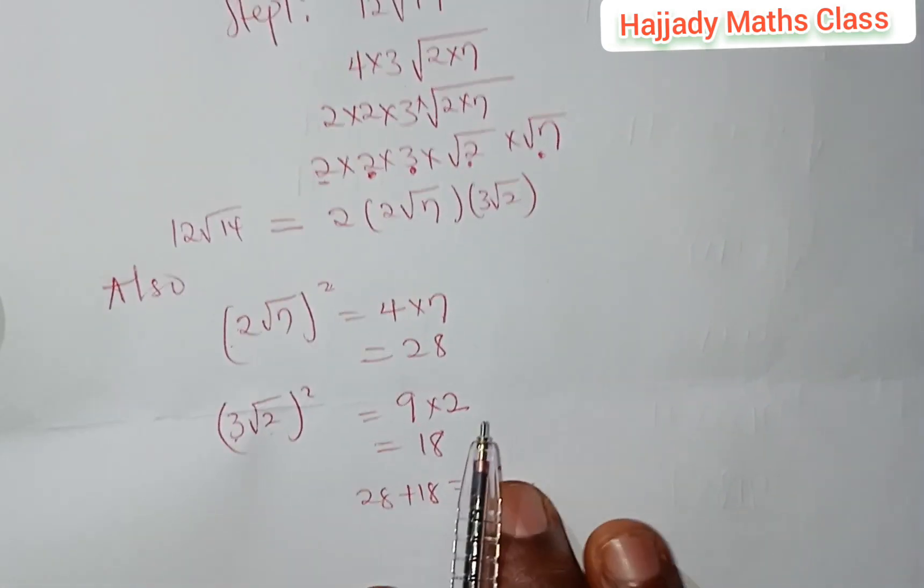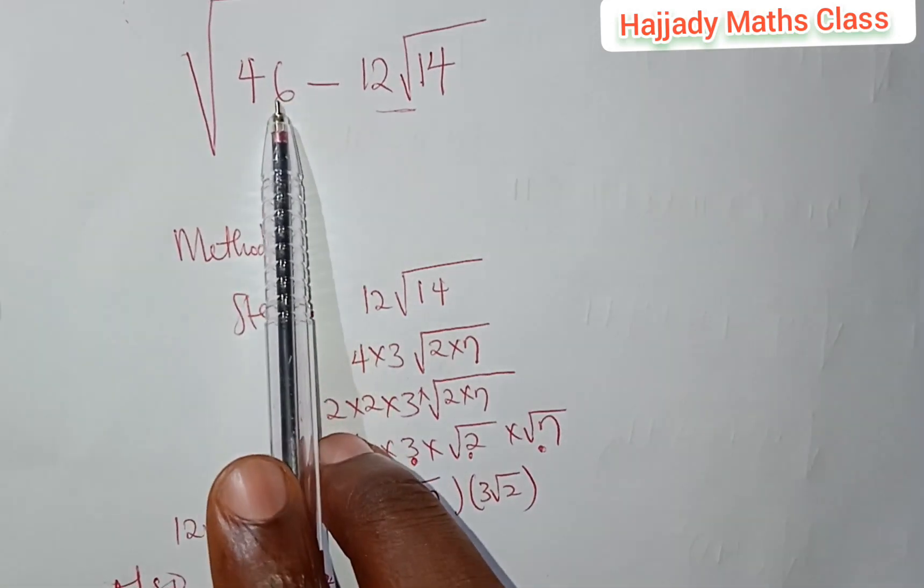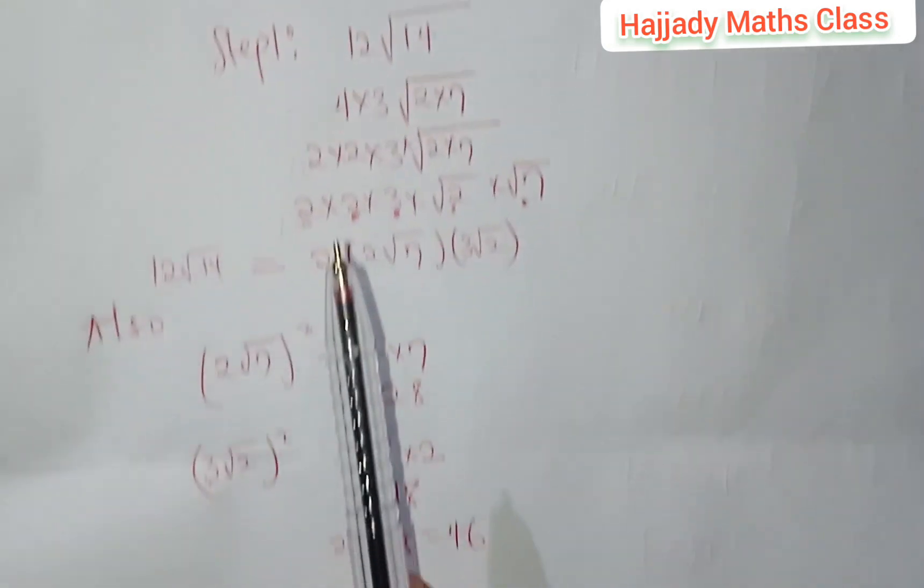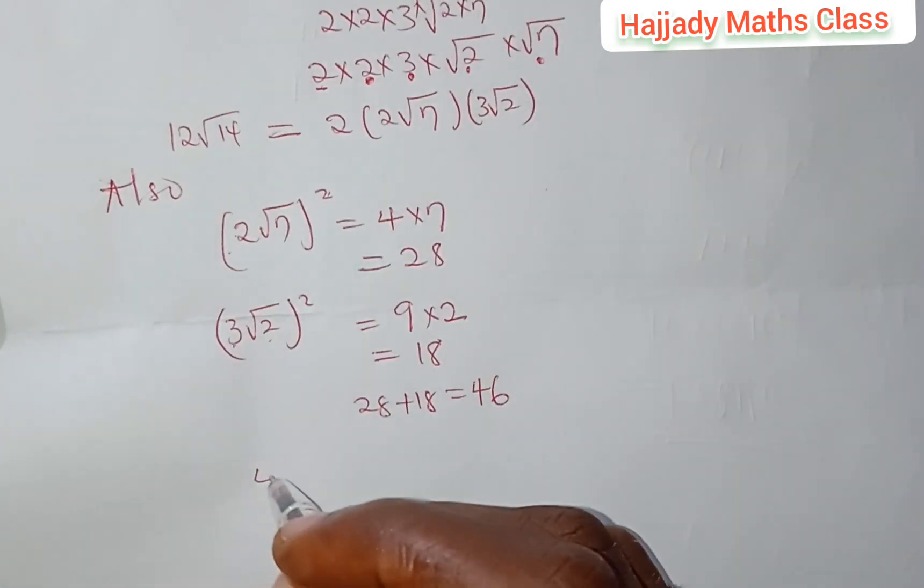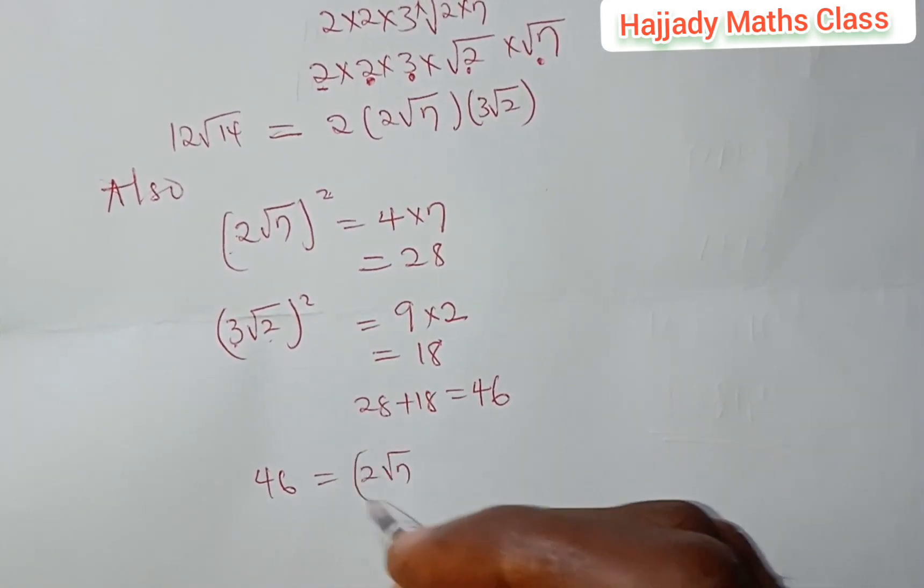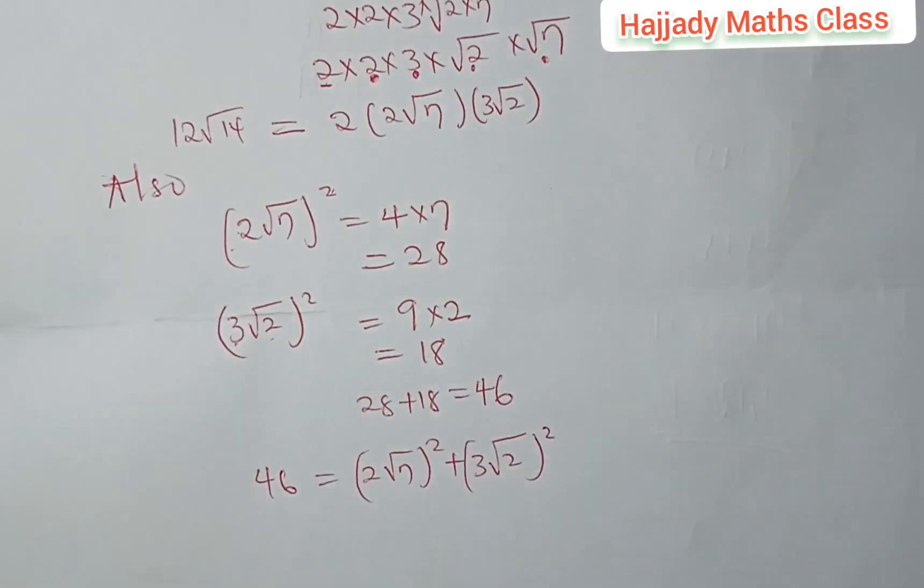And looking at this 46, from our question, it's equivalent to this 46. This is our question, which is √46. And here we are having √46. So, that means that 46 is equivalent to (2√7)² + (3√2)². Right?